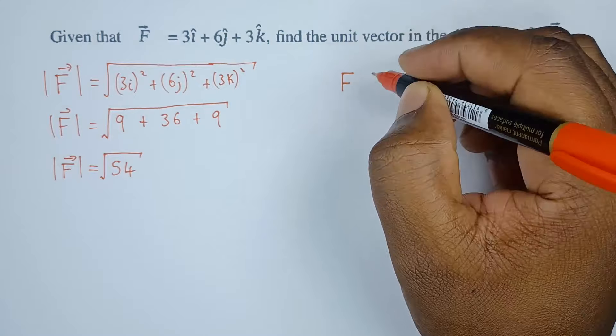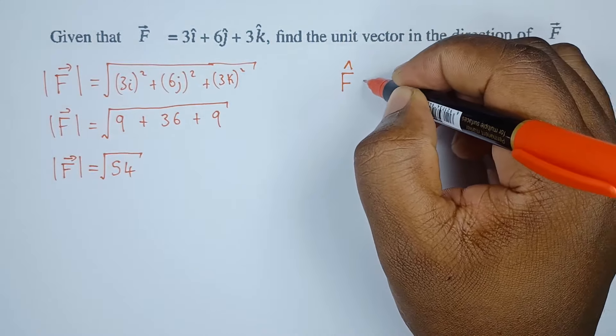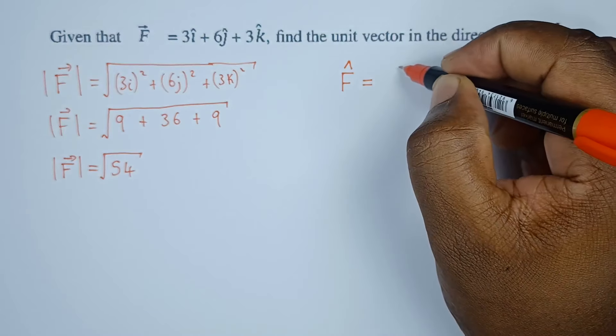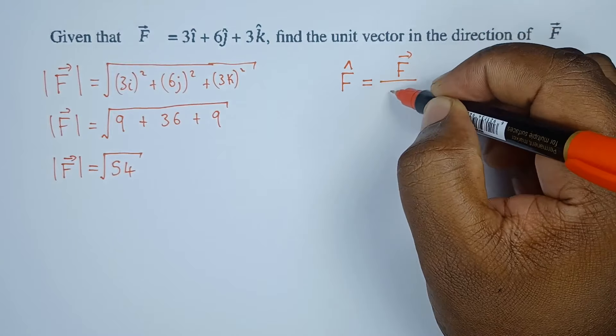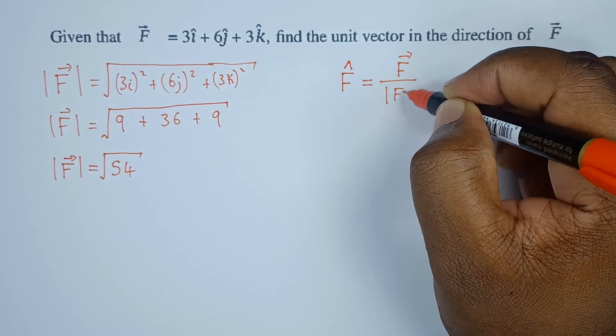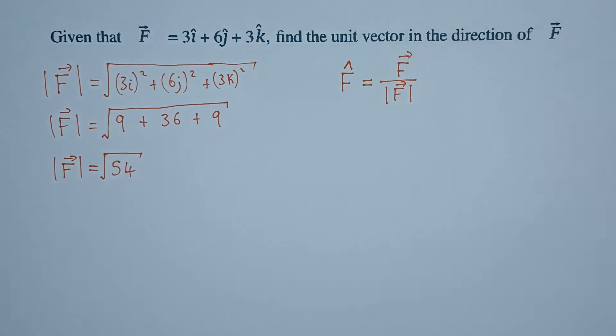This will equal vector F as it is divided by magnitude of vector F. This is what will give us a vector in the direction of vector F.